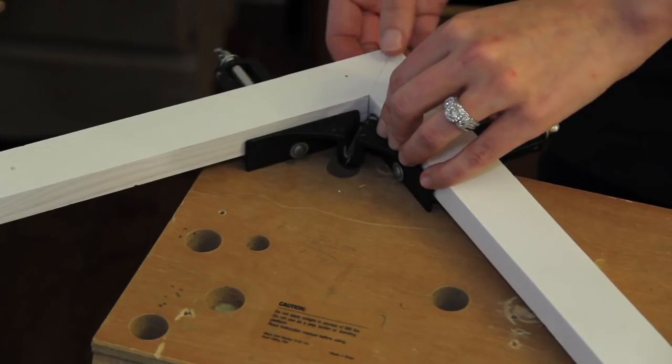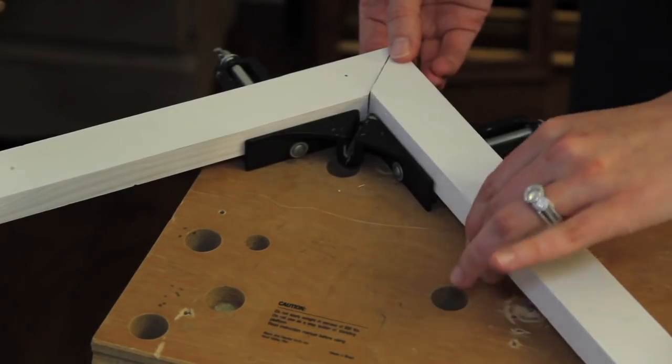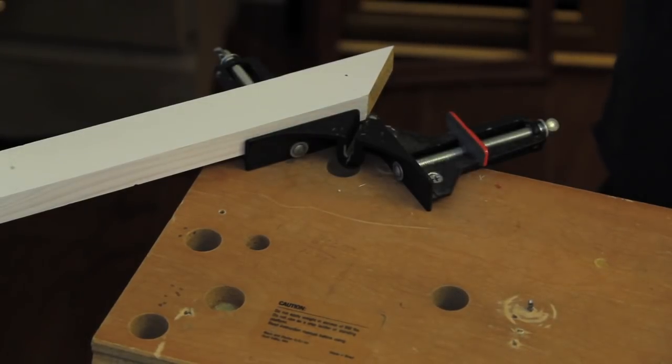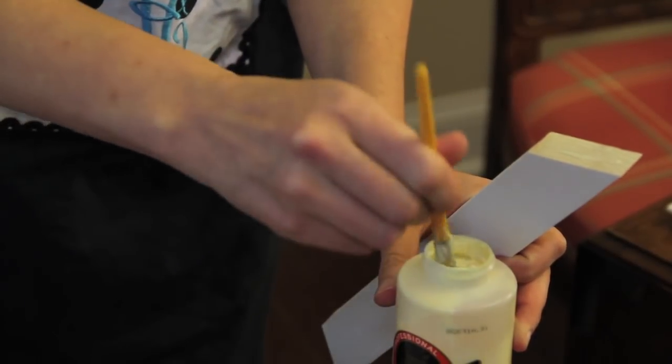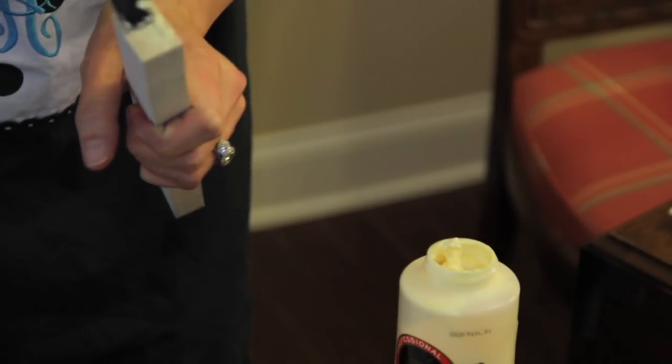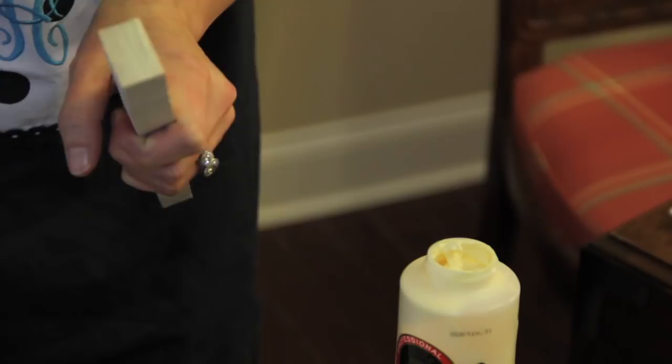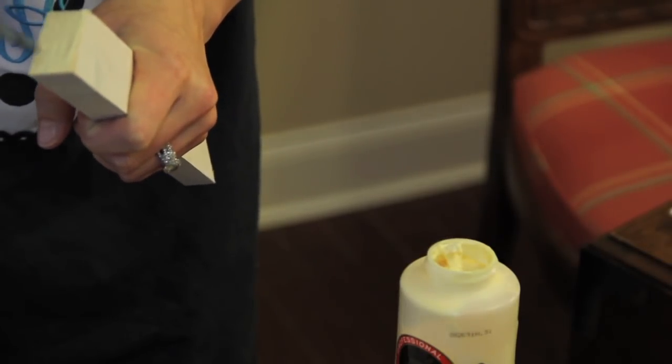So once you have that one side tightened, you take the other piece with your wood glue. I like to use a paint brush - I think it gets a more even coating - and paint that wood glue on. Give it a nice coat; you don't want it to be too thin that it doesn't stick or too thick that it takes too long to dry.